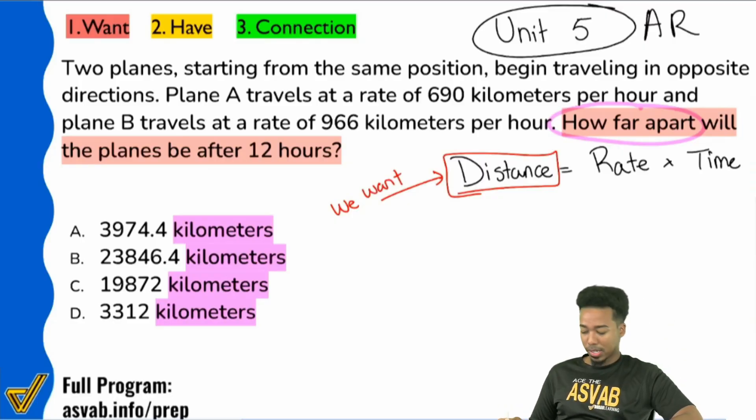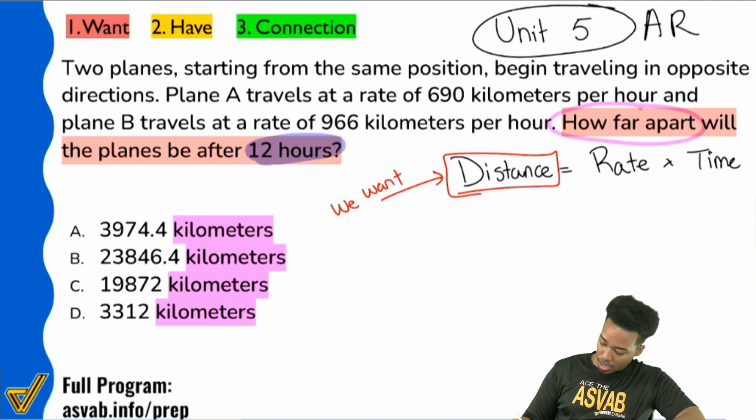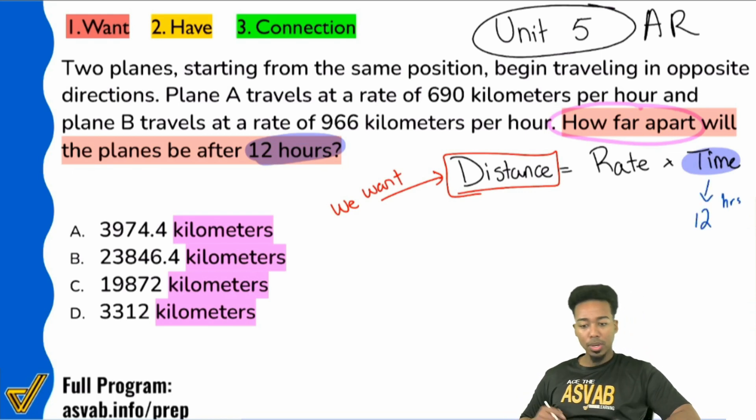We want the distance. And in the same question sentence, we see that we are looking at a time frame of 12 hours. So we have time. The time is 12 hours. So with that, it looks like all we've got to do is figure out what the rate is and we're done. Be careful though. Let's read through the question.